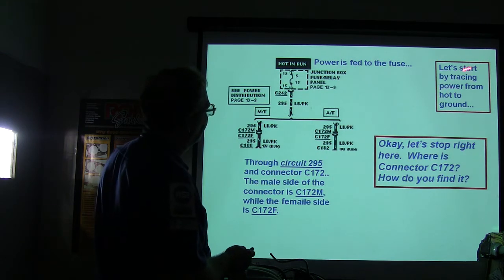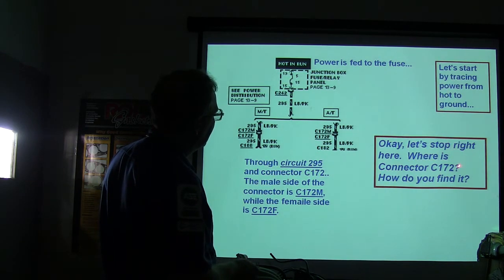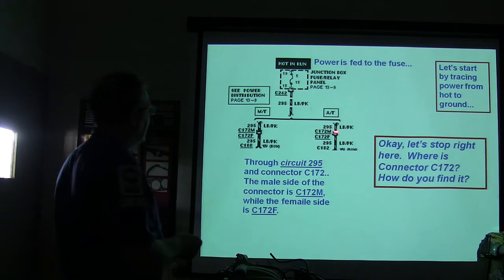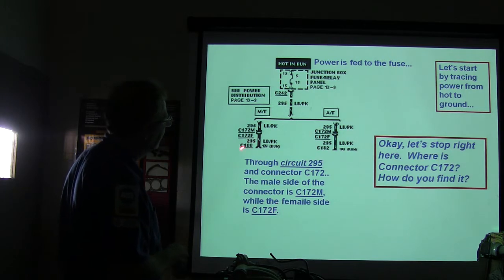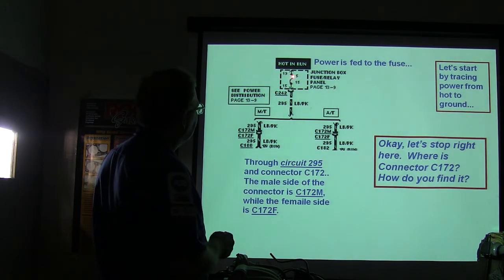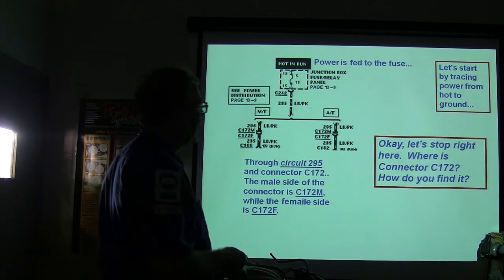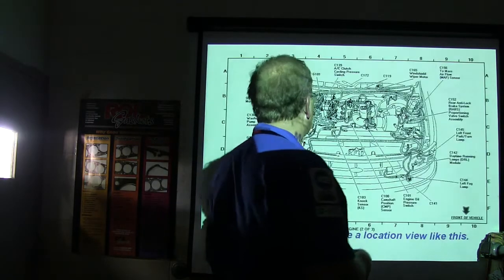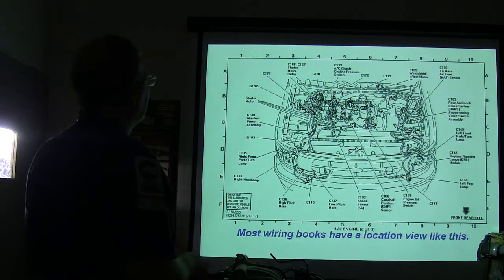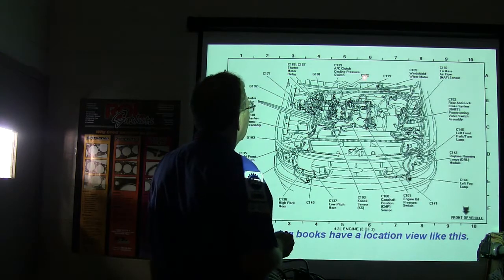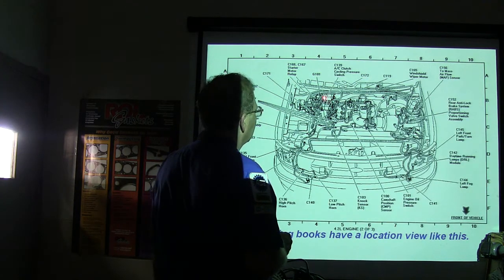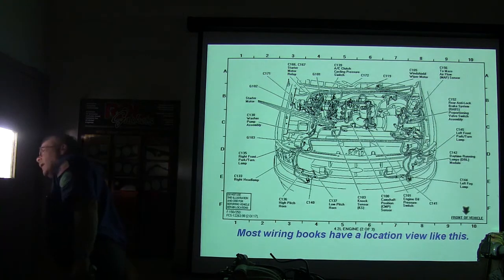Let's trace power from hot to ground to find out why the backup lights don't work. Through circuit 295 and connector C-172, the male side is C-172M and the female side is C-172F. Where is connector C-172? It's right there on the grid — that is a pretty good-sized connector, right under the hood and fairly easy to see.